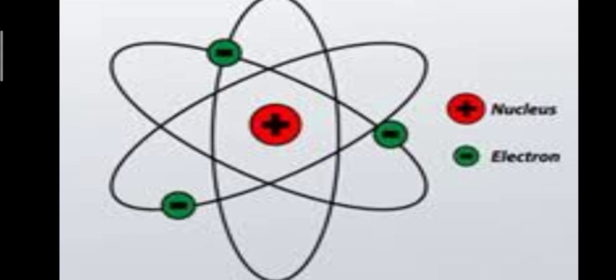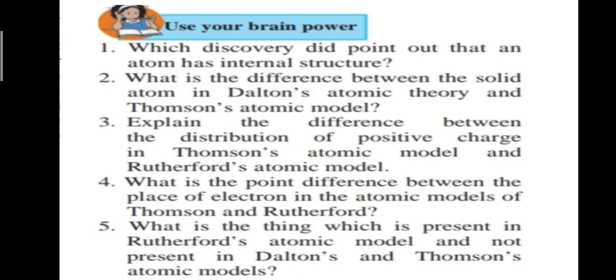According to Rutherford's model, the atom consists of a positively charged nucleus at the center with electrons revolving around it. But this revolution of electrons was problematic: any particle in a circular orbit would lose energy, making the atom highly unstable, and matter would not exist as we know it. So Rutherford's proof required further clarification - it had limitations that needed to be addressed.